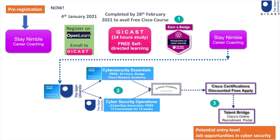Here's a quick snapshot of your GCAST journey. I have created other videos on the GCAST learning journey — please look up the videos using the links provided in the description box below. You should have by now registered with Stainable, enrolled to OpenLearn and the GCAST course, and should have started your course that went live on the 4th of January. You are expected to complete the course by 28th of February in order to get the digital badge, as well as free career coaching and free Cisco courses that are on offer as part of this project.